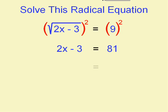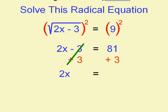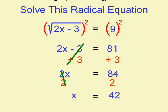Now we just solve normally by getting x alone. I'll add 3 to both sides. The 2 is multiplying, so I'll divide both sides by 2. And x in this case will equal 42.